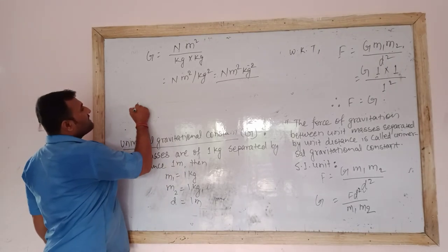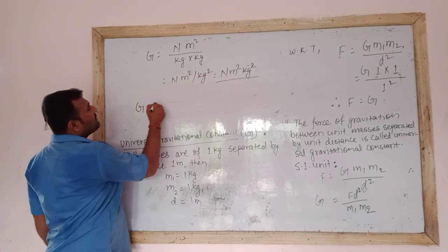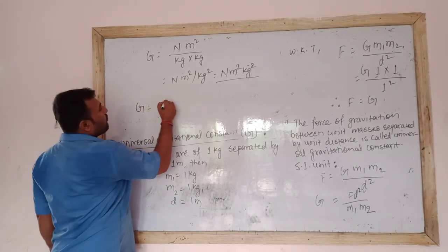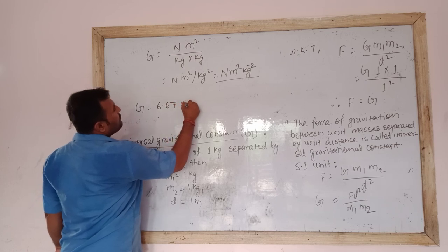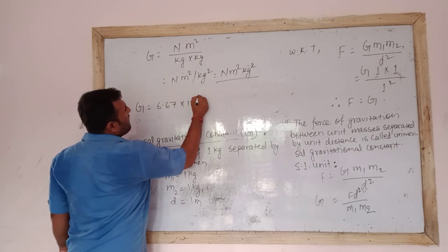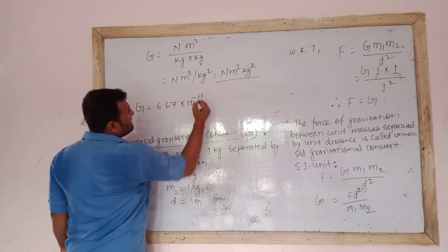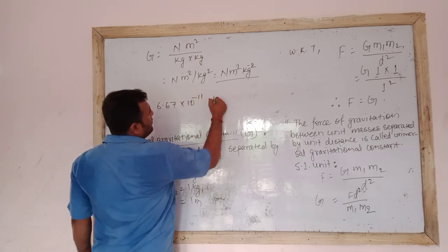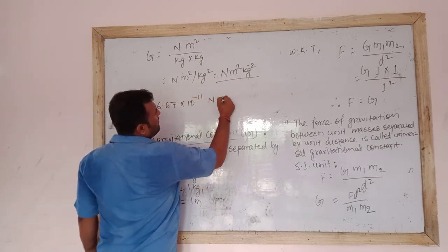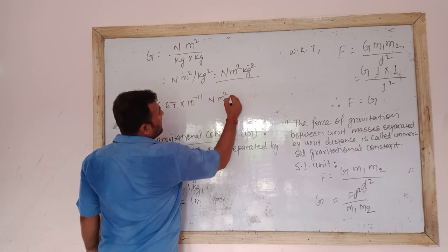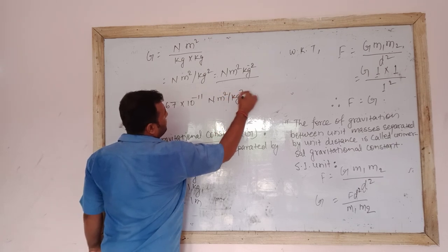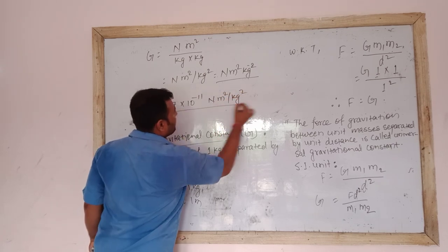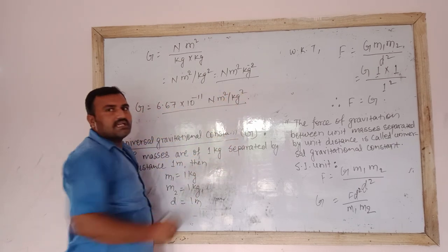Experimentally, the value of G is 6.67 times 10 to the power of minus 11 Newton meter squared per kg squared. Thank you.